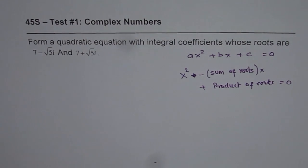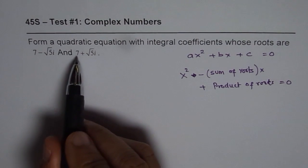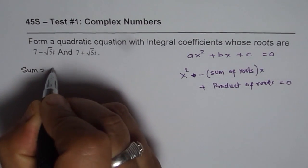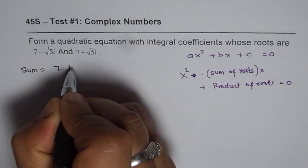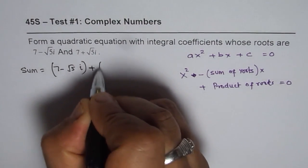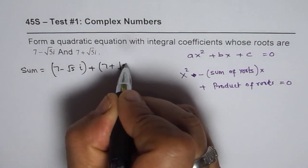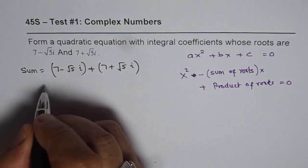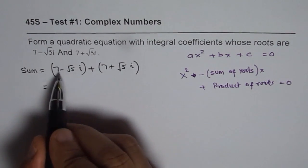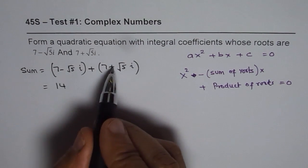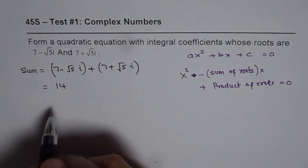We are given the roots which are 7 minus square root 5i and 7 plus square root 5i. So the sum of these roots is 7 minus square root 5i, this is the first root, plus 7 plus square root 5i. Roots will always be in conjugate pairs. When you add them up, you get 7 plus 7 is 14. Minus 5i plus 5i is 0, so the sum is 14.